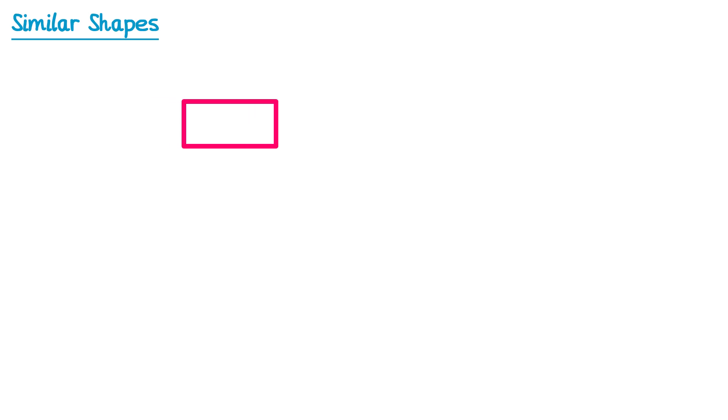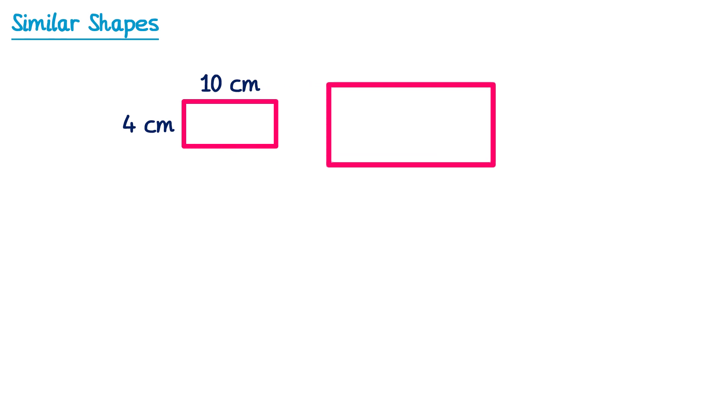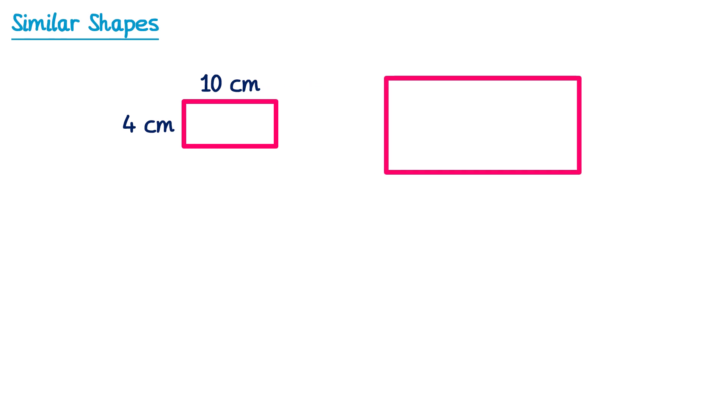Let's take a rectangle that has a width of 10cm and a height of 4cm. Now we're going to draw a second rectangle which is the same as this one, apart from we're going to double all of the lengths. So we're going to double the width of 10 which would make it 20, and we're going to double the height of 4 which would make it 8.